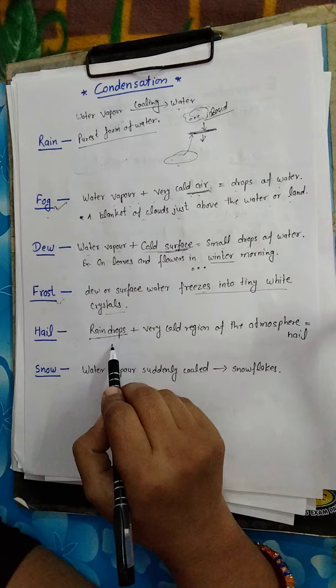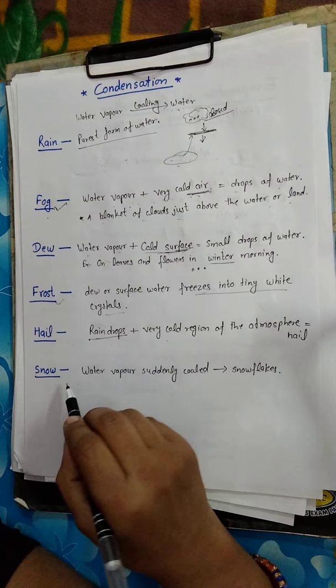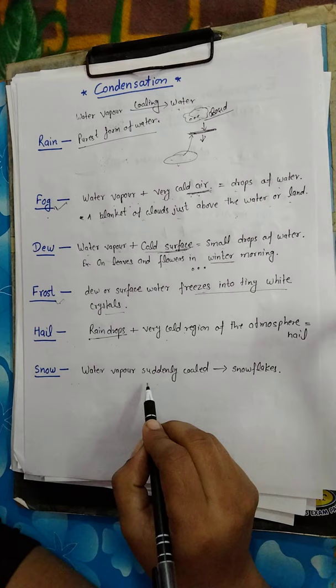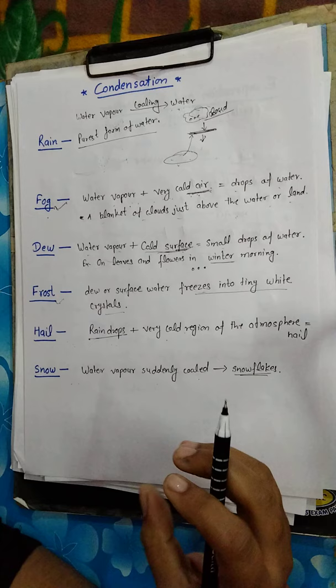Hail means ice stones — big stones of ice that fall from the sky. Next is snow. Snow means when water vapor is suddenly cooled in the atmosphere, it forms small flakes — snow flakes.